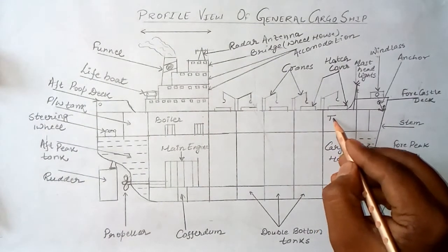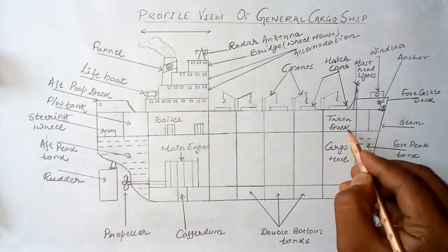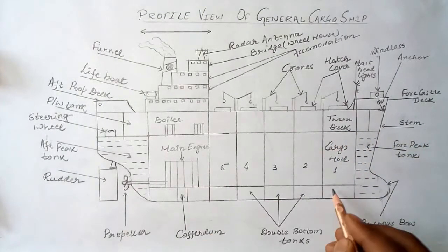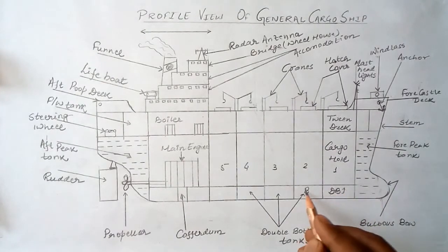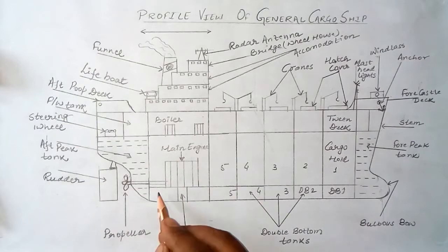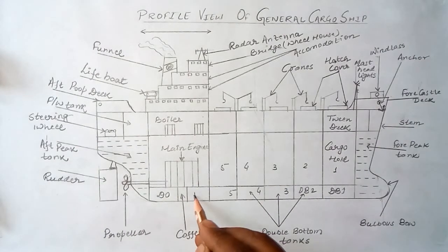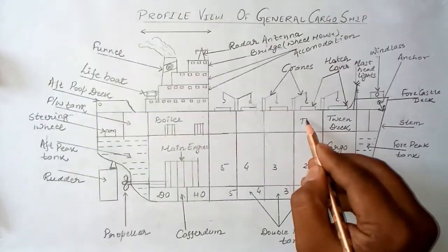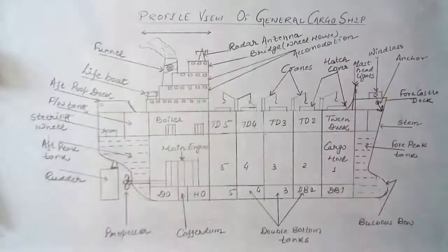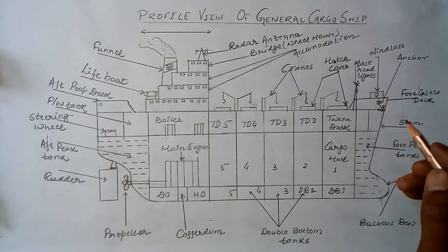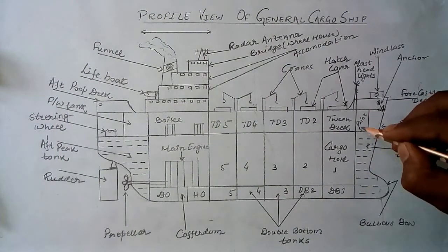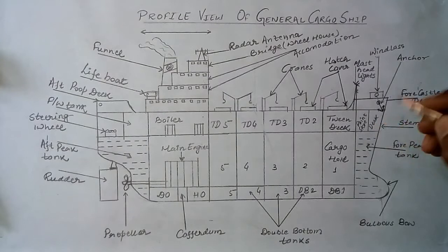Now for the cargo holds: the numbering of cargo holds and the twin deck compartments starts from the collision bulkhead going to the aft end of the ship. We have the double bottom tank, twin deck one through five. We also have heavy oil or diesel oil tanks, and in the fore peak area we have a paint store or deck stores.